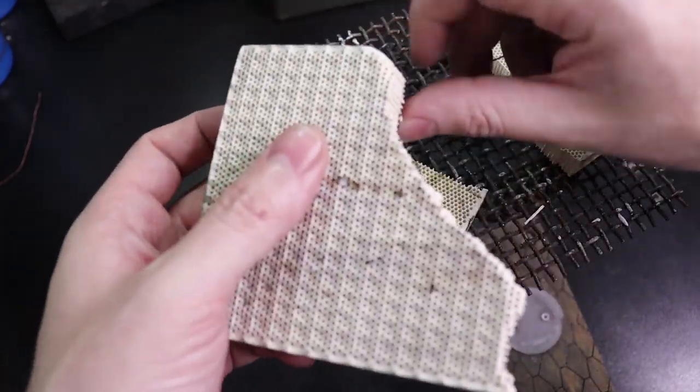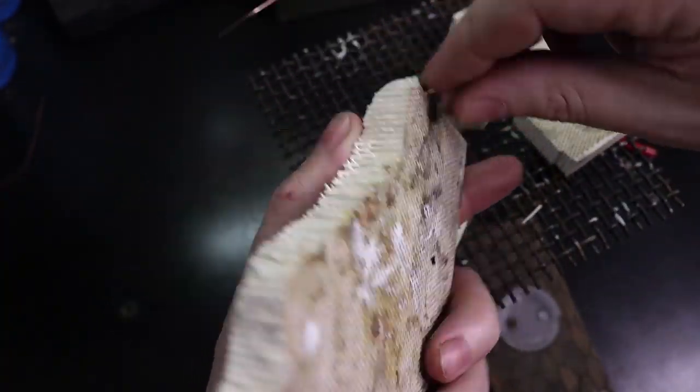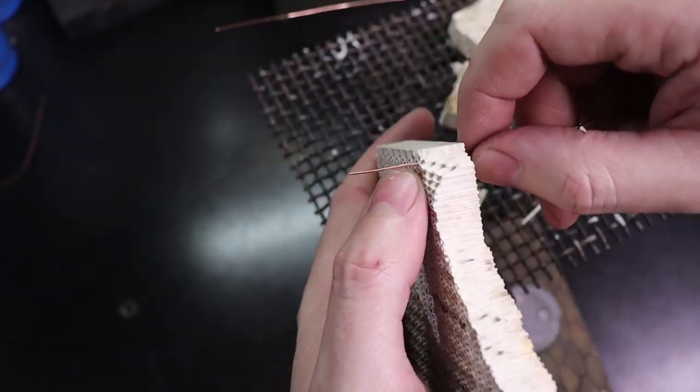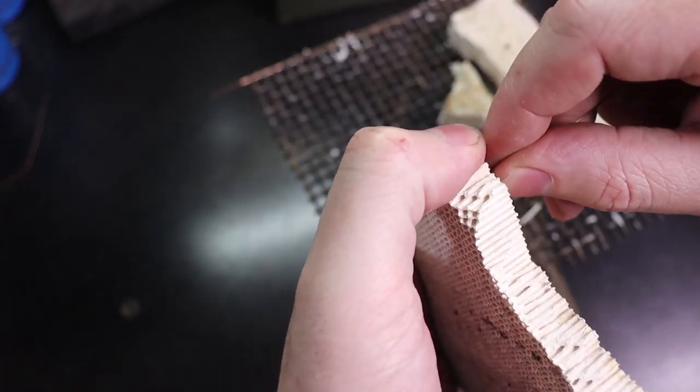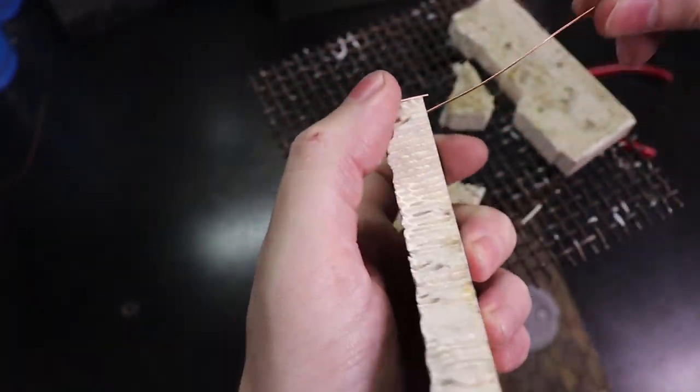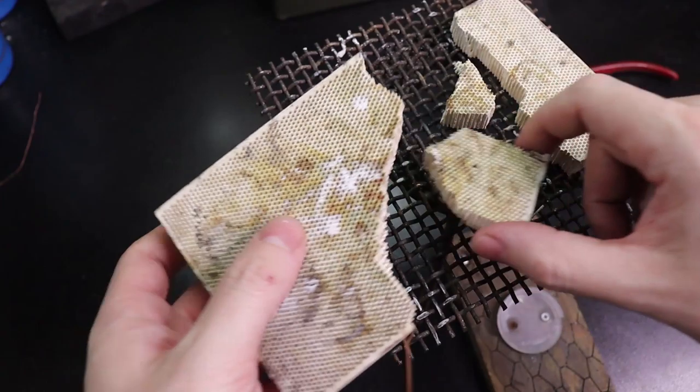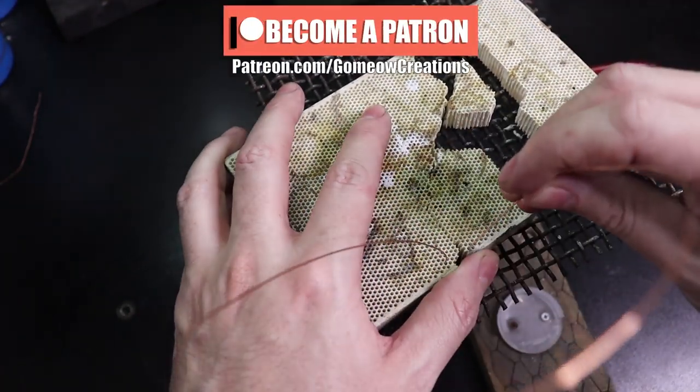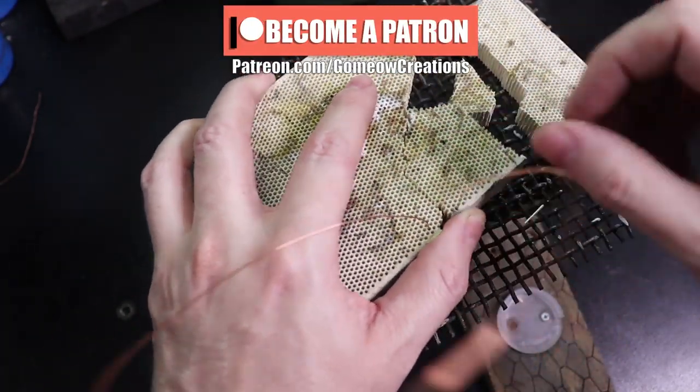So I'm going to start with the biggest piece, something like that, and then I'm going to bend it over the outside just to anchor it in place. Then start sewing it together.